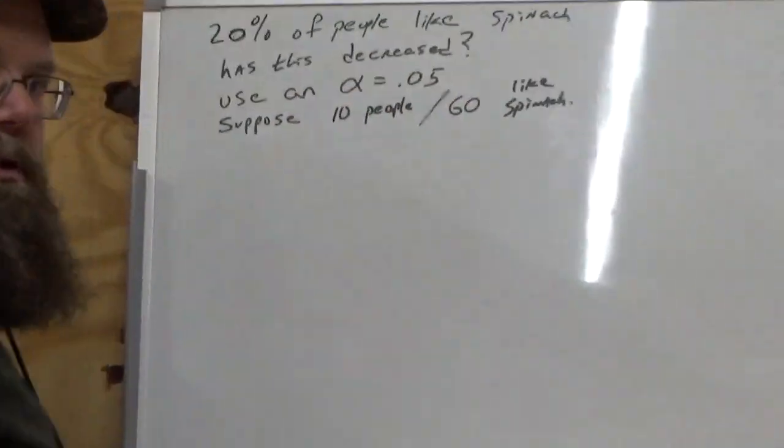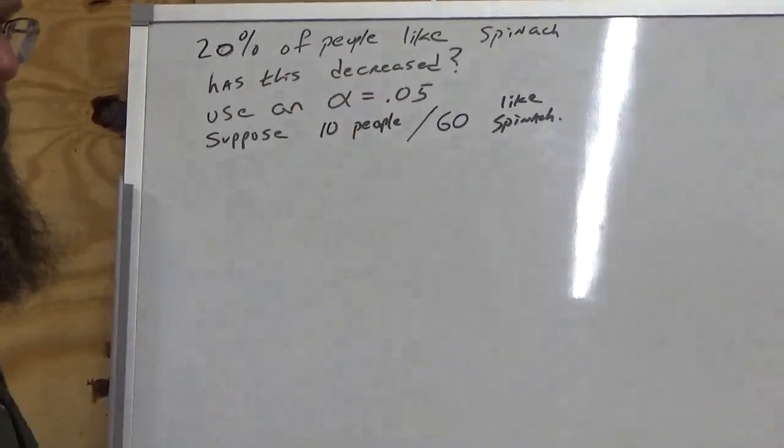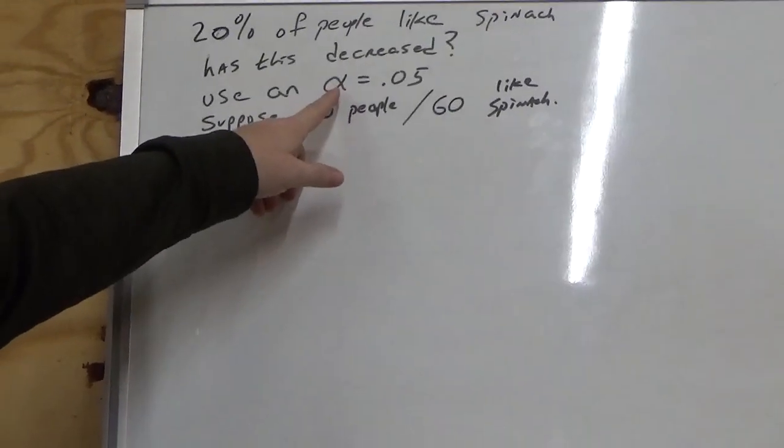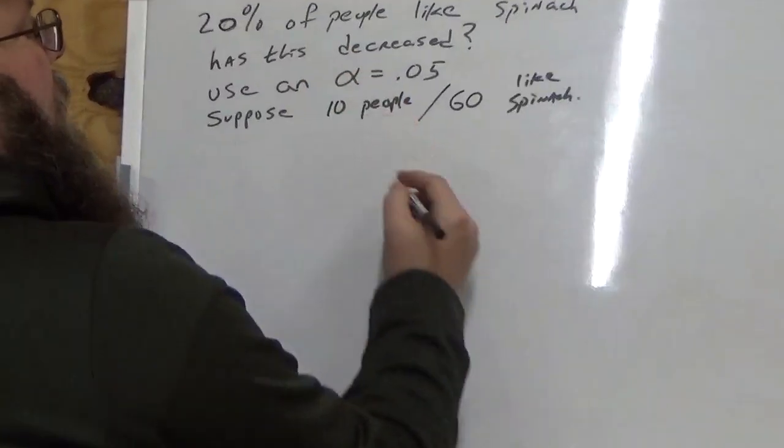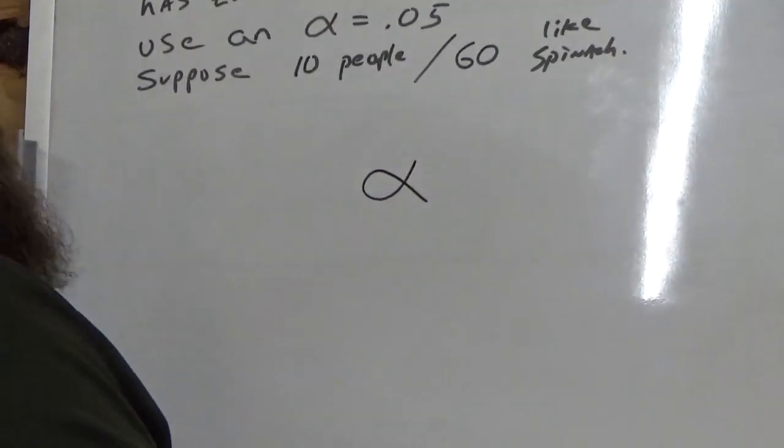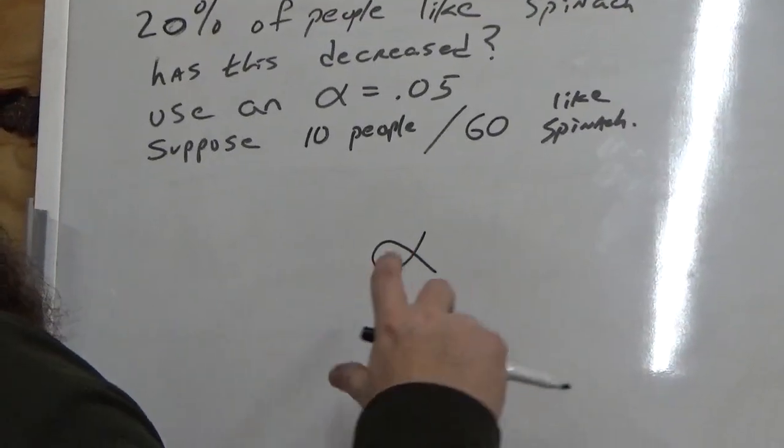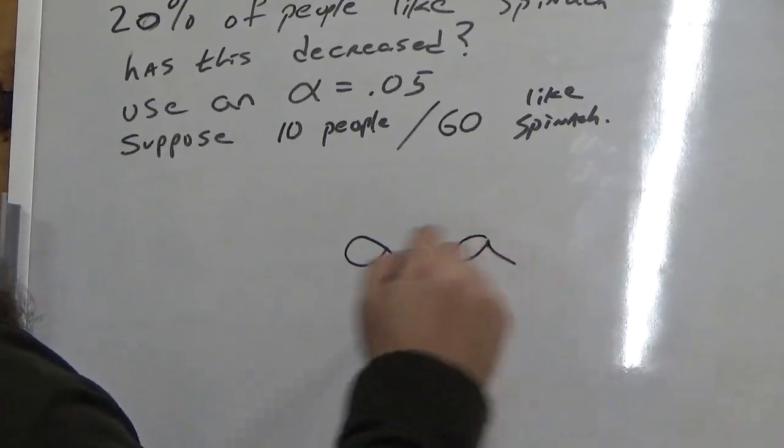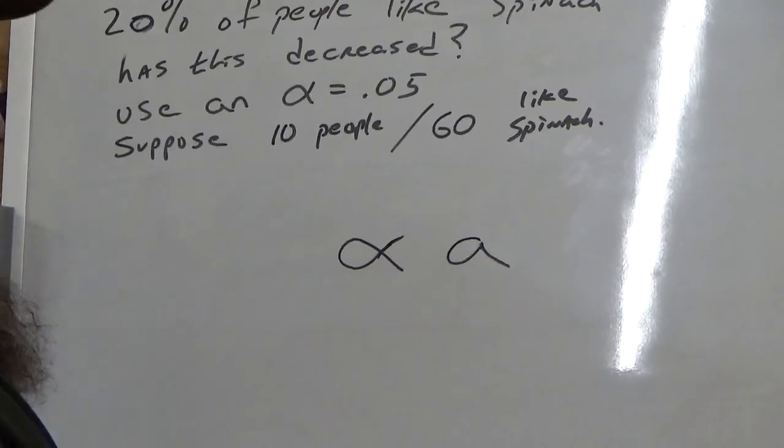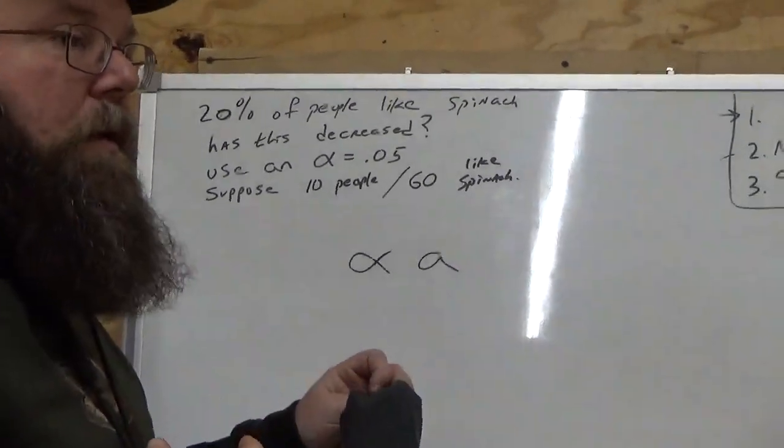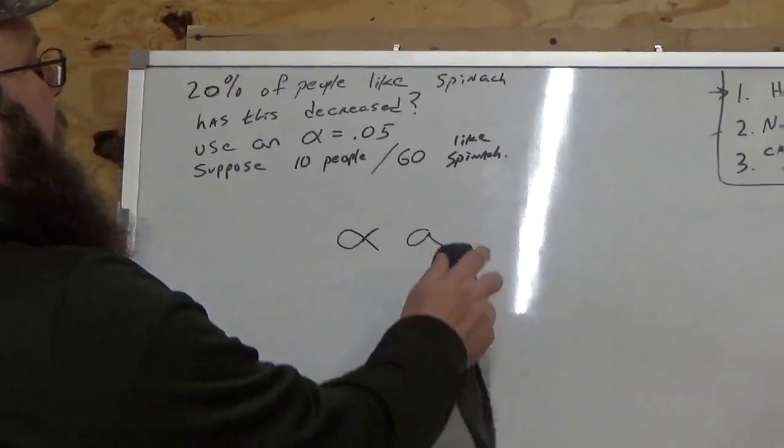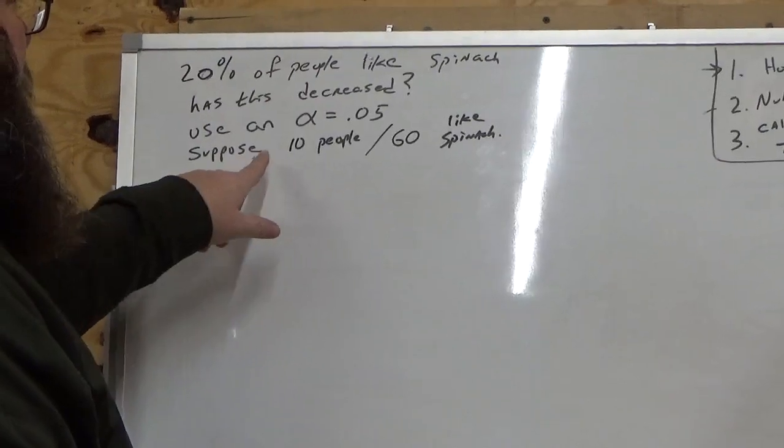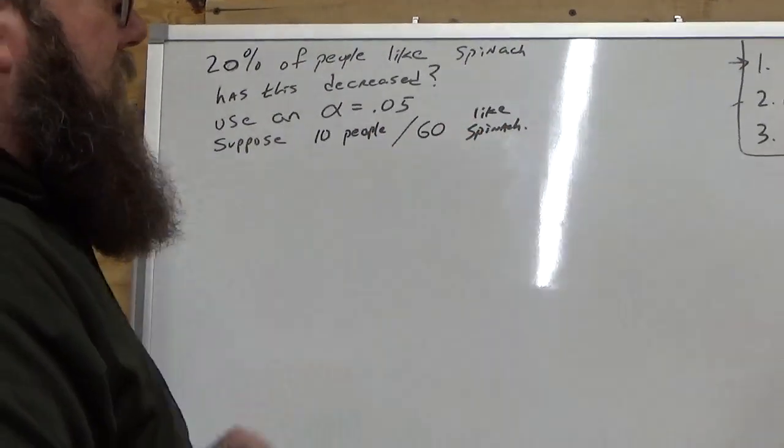So here's our problem. 20% of people like spinach. Has this decreased? Use a significance level, an alpha level. Alpha is like this little fish, it's a Greek letter. Alpha level is 0.05. And here's our test statistic. Suppose 10 people out of 60 like spinach.